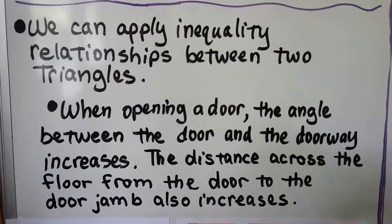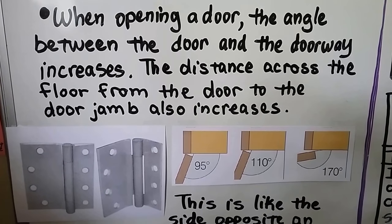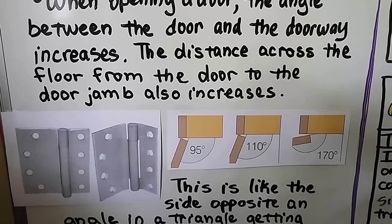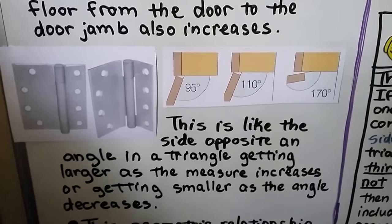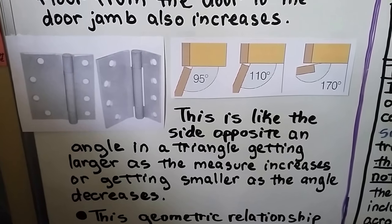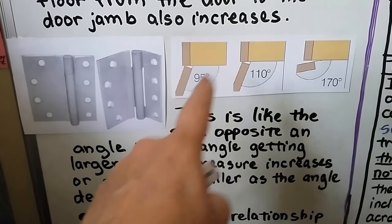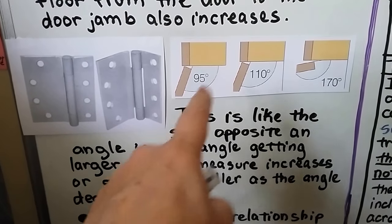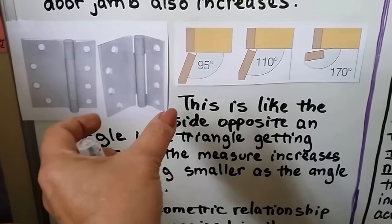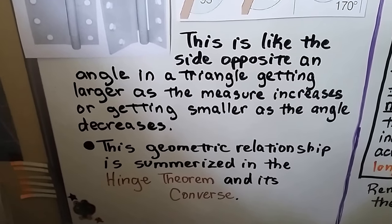We can apply inequality relationships between two triangles. When opening a door, the angle between the door and the doorway increases, and the distance across the floor from the door to the door jamb also increases. This is like the side opposite an angle in a triangle getting larger as the angle measure increases, or getting smaller as the angle decreases. So the point from the corner to the tip of the door — that segment gets larger and larger as the angle gets bigger. As the hinge opens up more, that segment gets bigger. This geometric relationship is summarized in the Hinge Theorem and its Converse.